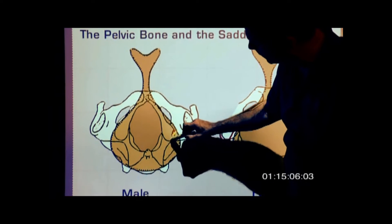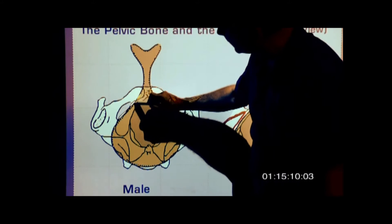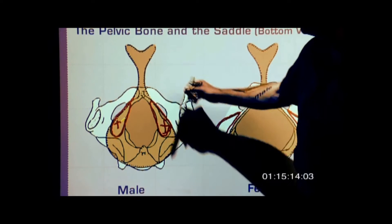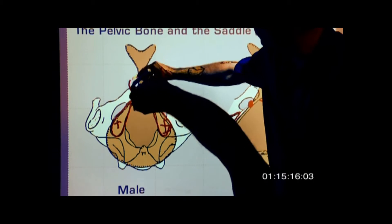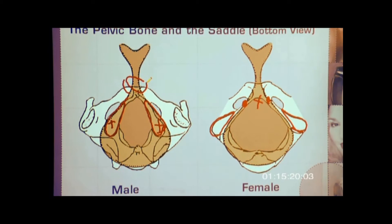Here we see on the male how he sits with his seat bones, comfortable in the soft area of the saddle, and therefore no pressure on the pubic symphysis or any parts that could be very painful.